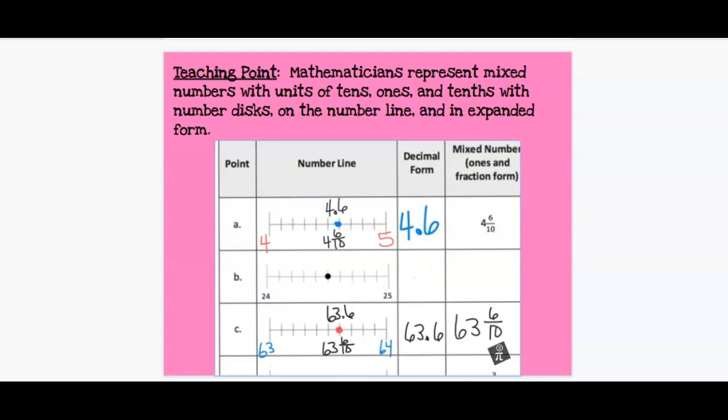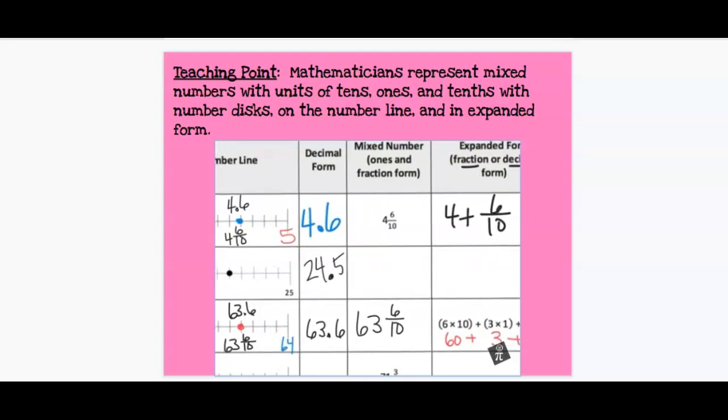first off, what is our decimal? Well, it lives between 24 and 25. So we know it's going to be 24 point something. So now we need to count. One-tenth, two-tenths, three-tenths, four-tenths, five-tenths. So it's smack dab in the middle. So that's 24 point five. 24 and five-tenths. And when I say it that way, that immediately tells me the fraction is going to be 24 and five-tenths.